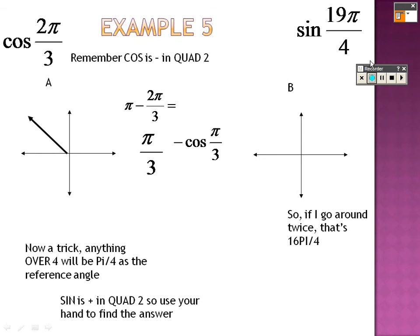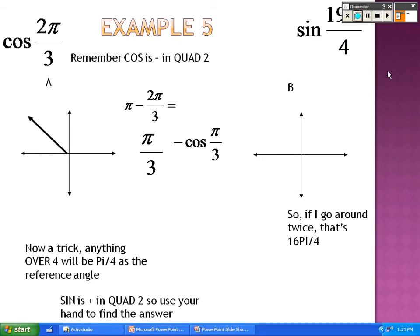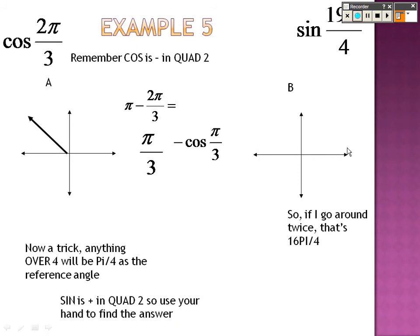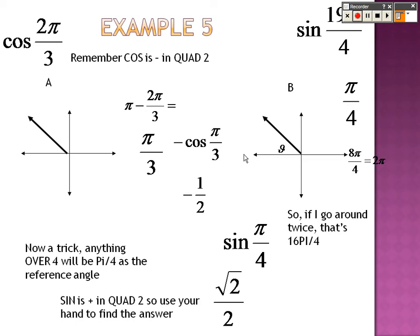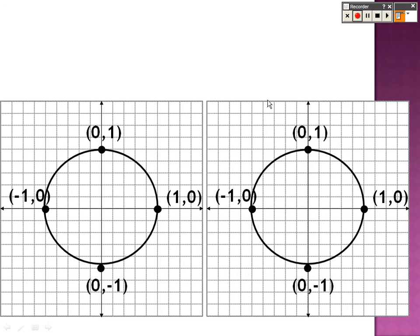For sine of 19pi over 4, the reference angle is pi over 4. It ends up in quadrant 2. Since 2pi is 8pi over 4, pi over 4 lands in quadrant 2. Sine of pi over 4 is root 2 over 2, and in quadrant 2 sine is positive, so the final answer is root 2 over 2.